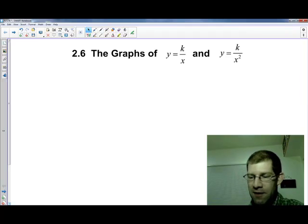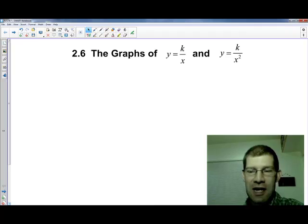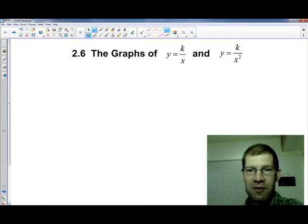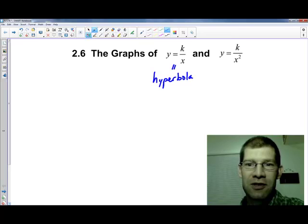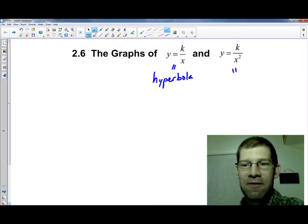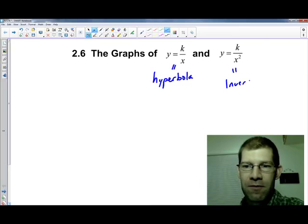For those, first thing I want to mention is the names, although these also show up on the sheet. This here is a hyperbola. That's y equals k over x and y equals k over x squared. Technically that's an inverse square.